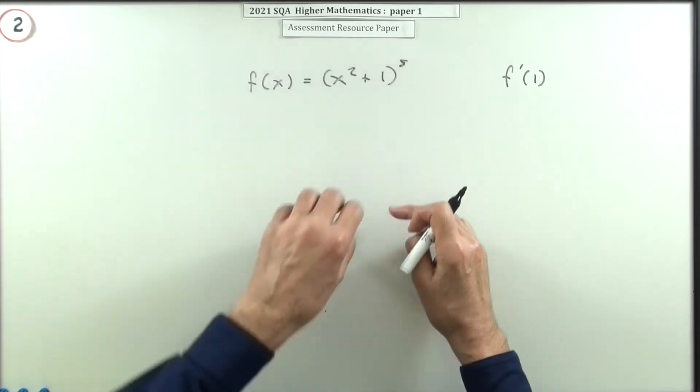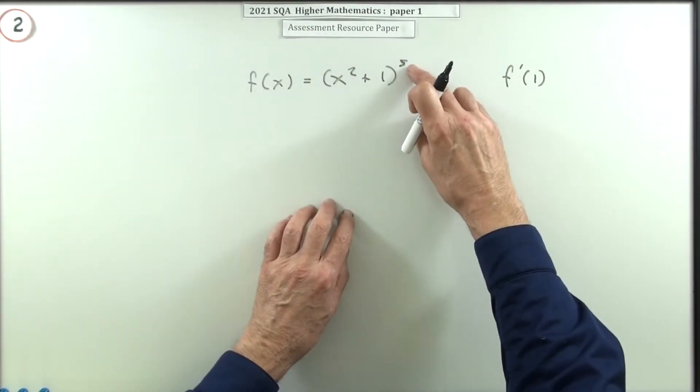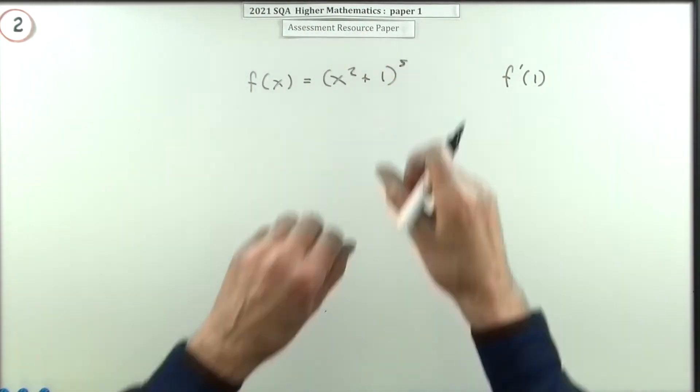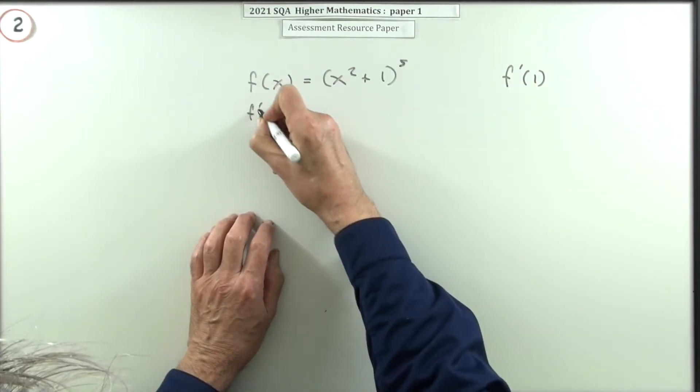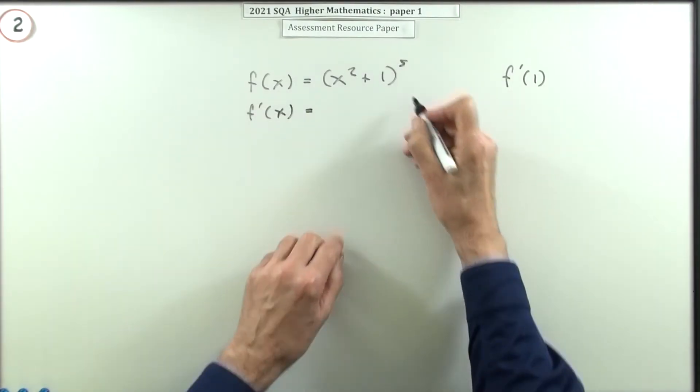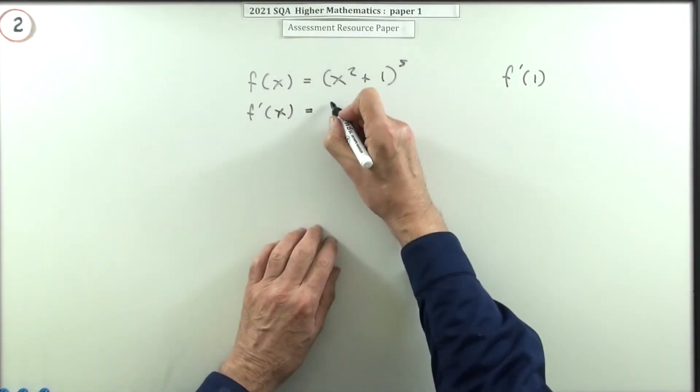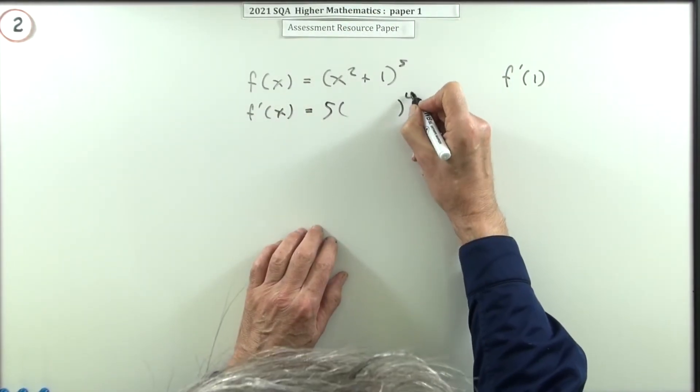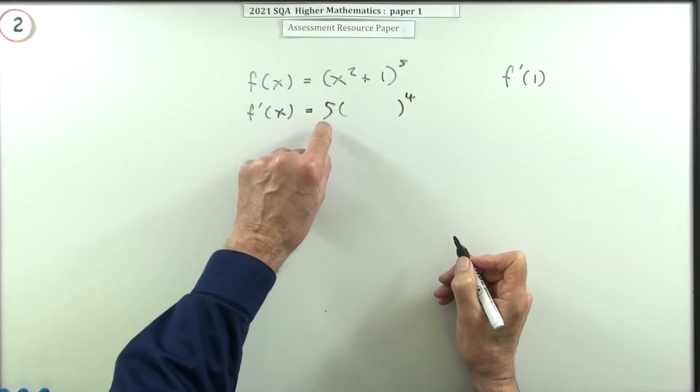The inner change: how does the bracket change the value of the bracket when you change x? And then how does the whole thing when you do power five of that change? So the derivative chain rule—you do the outer one first of all. Well, just like anything, anything to the power five would be five times the thing to the power four. That's how fast that changes when you change the bracket.